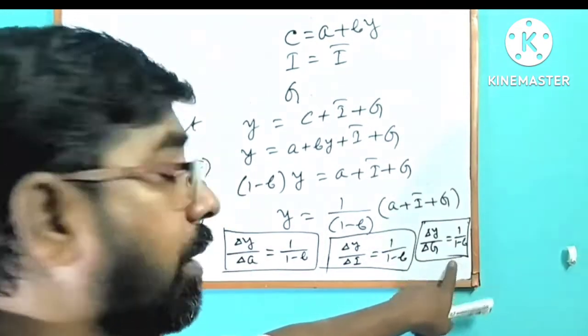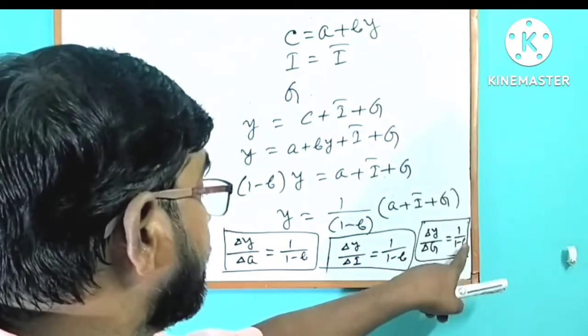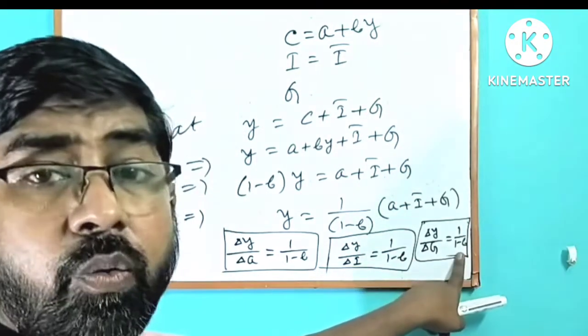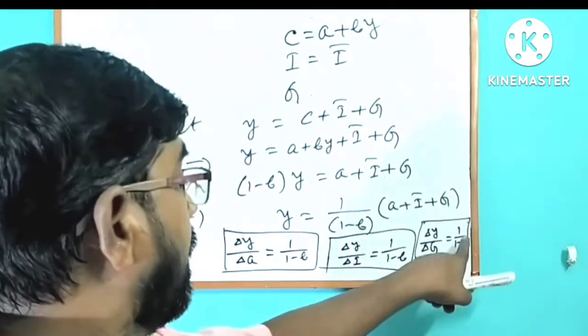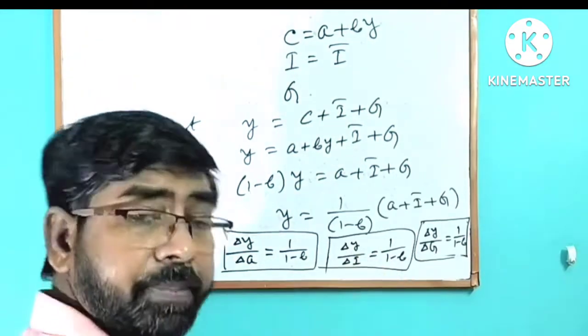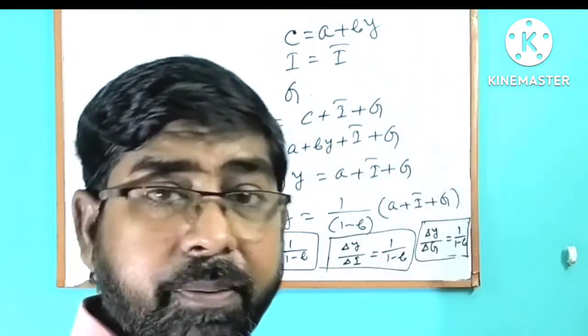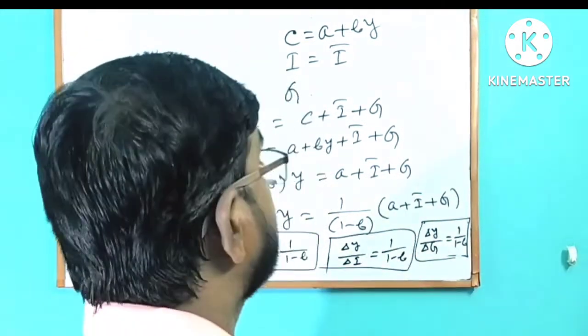We are going to change the government expenditure. That value is 1 by 1 minus b, where b means marginal propensity to consumption — MPC.